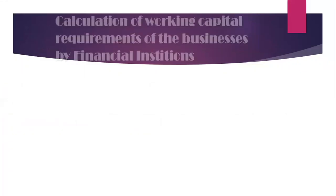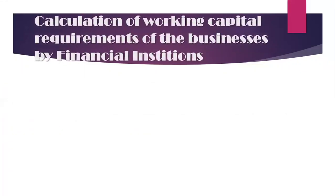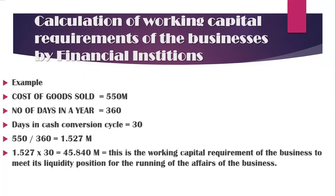Through this formula, the banking industry decides what amount should be given to their customer in the shape of working capital. In the next slide, you are watching actual hypothetical figures. We are assuming the cost of goods sold of the customer is 550 million. The number of days in a year is 360 days, and the days in the cash conversion cycle — this is a hypothetical figure — is 30 days.